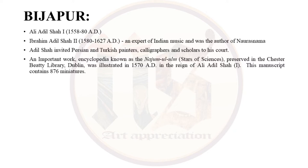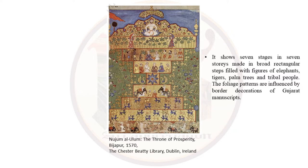The ladies in the paintings are tall, thin and wearing South Indian dresses. There is influence of Ottoman i.e. Turkish manuscripts in the planetary paintings of this encyclopaedia. One painting called Throne of Prosperity from Nujum al-Ulum shows 7 stages in 7 stories made in broad rectangular steps filled with figures of elephants, tigers, palm trees and tribal people. The floral patterns are influenced by border decorations of Gujarat manuscripts, and there is clear influence of Lepakshi mural paintings on the depiction of females and the rich colour scheme.